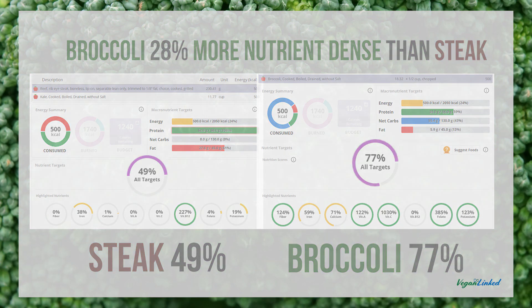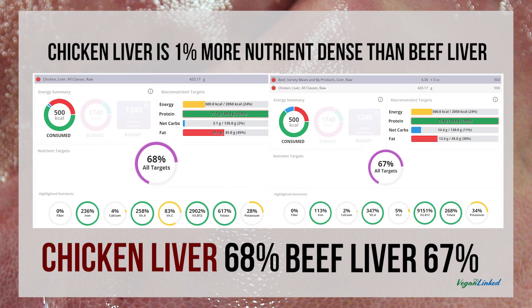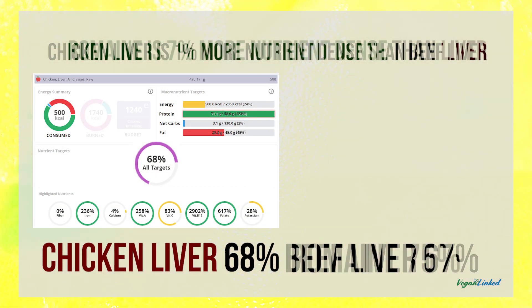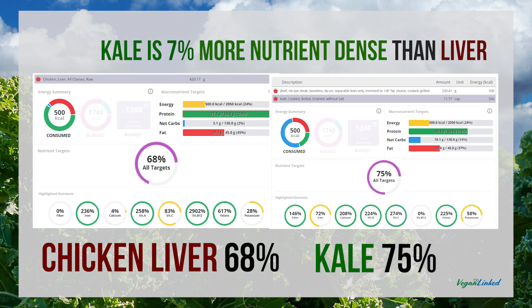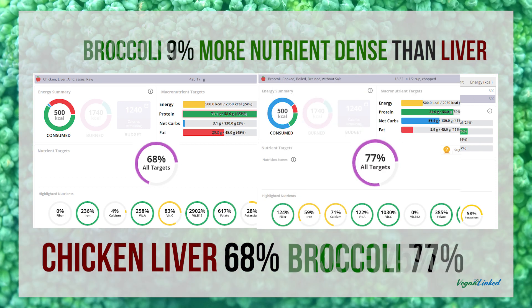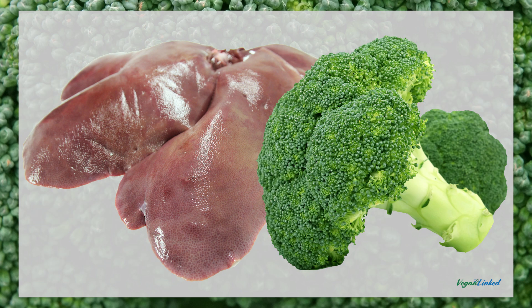Now let's look at liver. Chicken liver is one percent more nutrient-dense than beef liver, but romaine is seven percent more nutrient-dense than chicken liver. Kale is seven percent more nutrient-dense than chicken liver. Broccoli is nine percent more nutrient-dense than chicken liver. So much for liver — and need I say it's a lot easier to grow romaine, broccoli, or kale in my own backyard than it is to grow a liver.